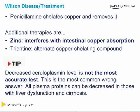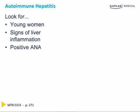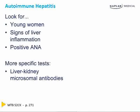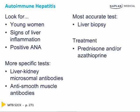In autoimmune hepatitis, look for a young woman with signs of liver inflammation and a positive ANA. The two antibodies you need to know are the liver-kidney microsomal antibody and the anti-smooth muscle antibody. The most accurate diagnostic test is a liver biopsy. Treatment is with prednisone and/or azathioprine.